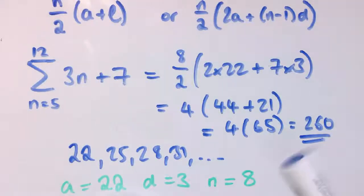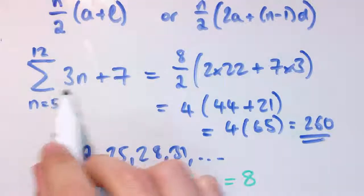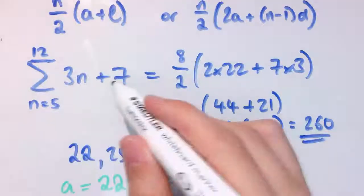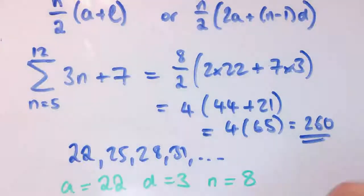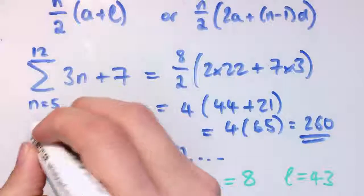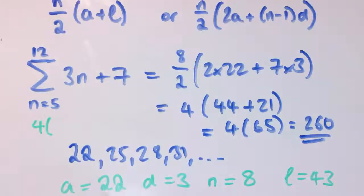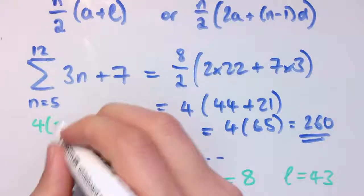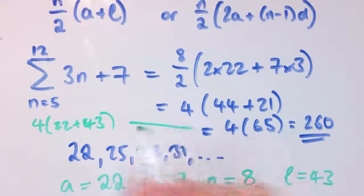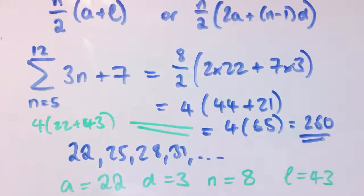And we could also instead have used this formula here if we'd wanted to. We could have said, let's work out what the last term is. And when I put 12 in here, that's the last term, so that's 3 times 12, that's 36, plus 7 is 43. So we could have l equals 43. And we could do it using this formula instead. So n over 2 is 4, and it's times the first term, 22, plus the last term, 43, which again gives us 4 times 65, which is 260.